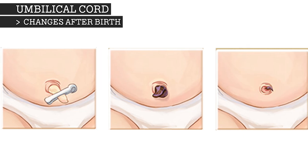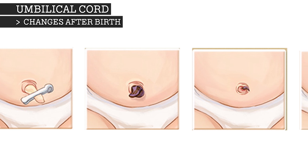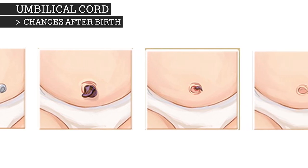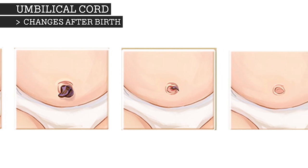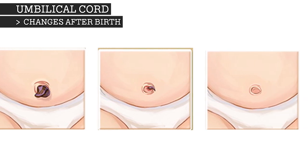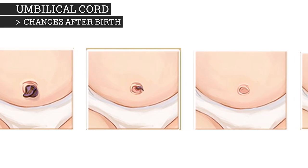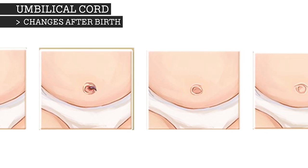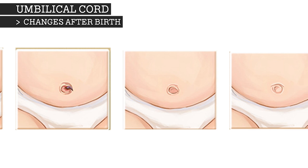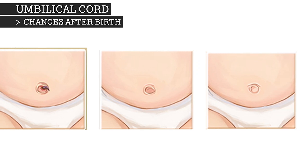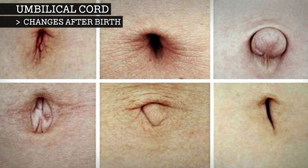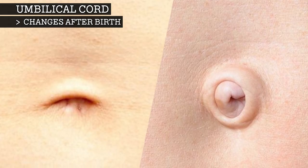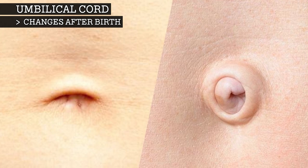After cutting the cord, the newborn wears a plastic clip on the navel area until the clamped region of the cord has dried and sealed sufficiently. The length of the umbilical cord left attached to the newborn varies, and the stub left behind remains for up to 10 days as it dries and then falls off, leaving behind the belly button. This means that the belly button is essentially a scar, and whether you have an innie or an outie simply depends on how your skin heals.